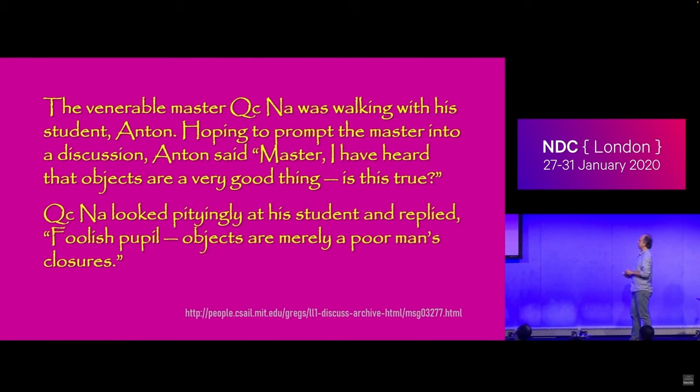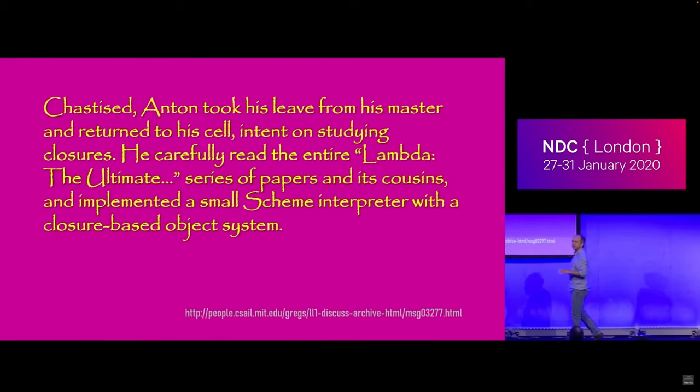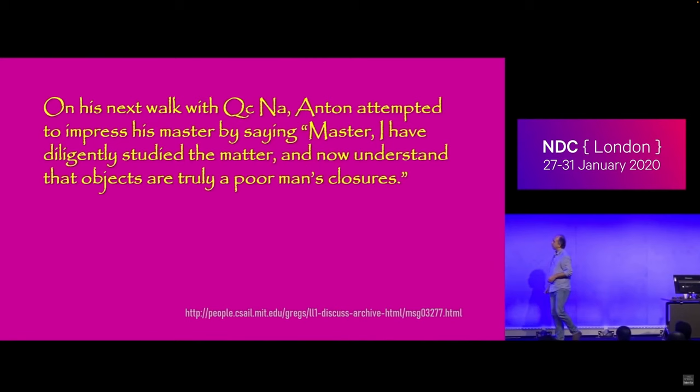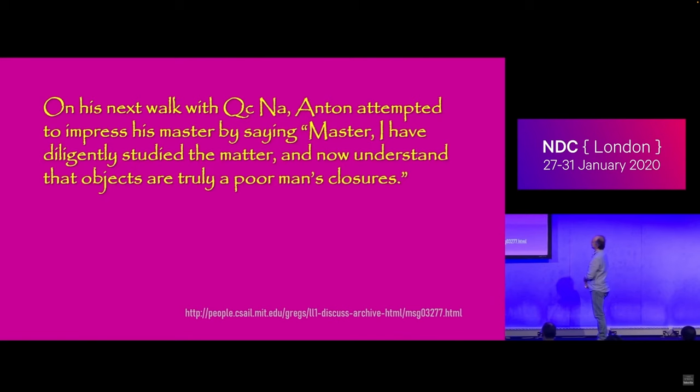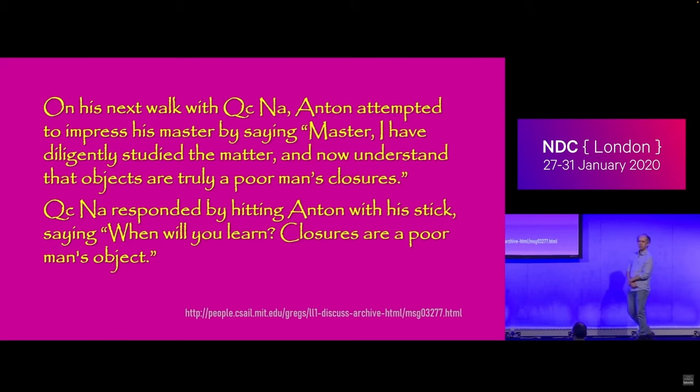Chastised, Anton took his leave from his master and returned to his cell, intent on studying closures. He carefully read the entire Lambda the Ultimate series and implemented a small Scheme interpreter with a closure-based object system. On their next walk, Anton tried to impress his master by saying, 'I now understand that objects are truly a poor man's closures.' Kroknar responded by hitting Anton with his stick, saying, 'When will you learn? Closures are a poor man's objects.' At that moment, Anton became enlightened.